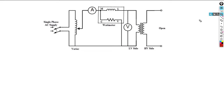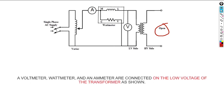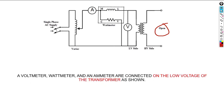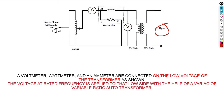To perform the open circuit test, we connect a voltmeter, wattmeter, and ammeter on the low side of the transformer. The voltage at rated frequency is applied to the low side with the help of a variac — a variable-ratio transformer — used in the lab to supply a small variable voltage.